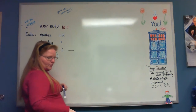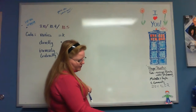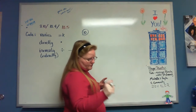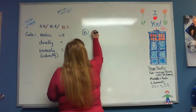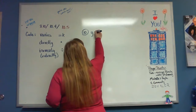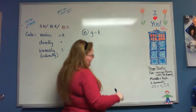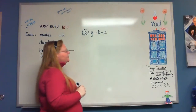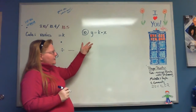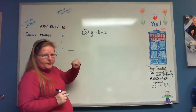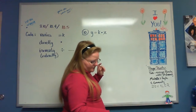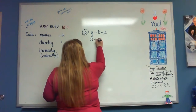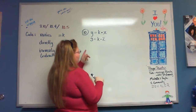Let's look at problem number 10 on page 428. It says Y — so I write down Y. Then it says 'varies' — so I write equals K. Then it says 'directly' — so I write a multiplication sign. Then it says 'with X' — so I write X. That's my equation: Y equals K times X. They say Y equals 3 when X equals 2.